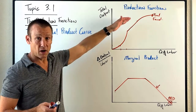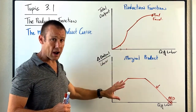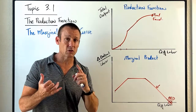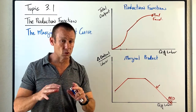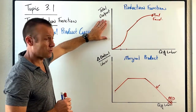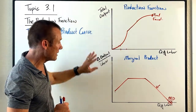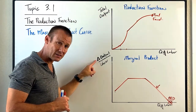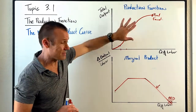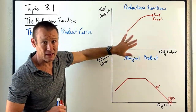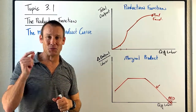So there we've got it — the production function and the marginal product curve. Both graphs are showing increasing marginal returns, constant marginal returns, and decreasing or diminishing marginal returns. What's different between the two graphs? On the production function graph, it's just total output on the vertical axis. On the marginal product graph, it's the change in output per laborer. But we're graphing the same exact thing in both graphs. I hope that made sense. We'll see you in the next video.